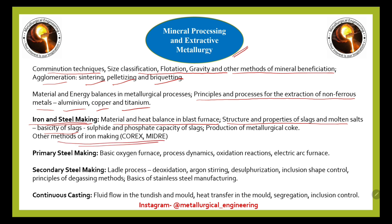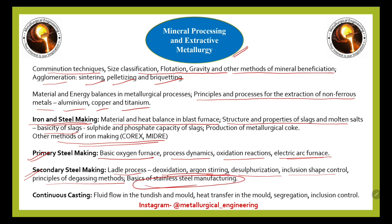Primary steel making: the BOF (Basic Oxygen Furnace) process, dynamics of oxidation and re-oxidation, EAF (Electric Arc Furnace). Secondary steel making covers ladle processes including deoxidation, argon stirring, desulfurization, inclusion shape control, principles of degassing methods, and basics of stainless steel manufacturing — this part is most important.